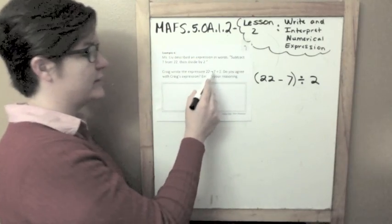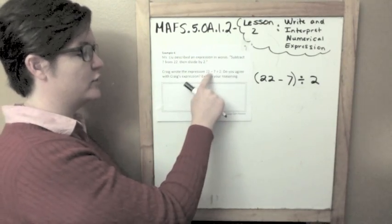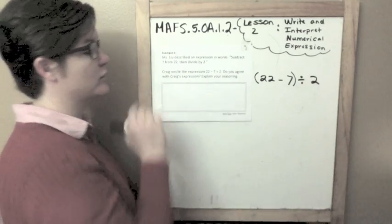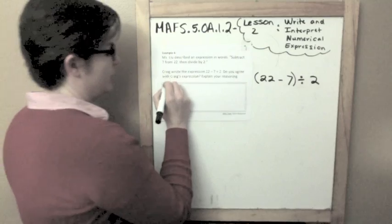That is not what Miss Lou is asking me to do. She wanted me to do 7 from 22 first. So when Craig writes 22 minus 7 divided by 2, we'd have to do this first. So do you agree with his expression? No.